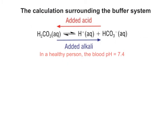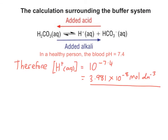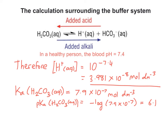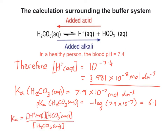Let's look at the calculations surrounding this buffer system. You start with the desired pH, which is 7.4. If you insert 7.4 into the pH equation — 10 to the minus pH — it tells you that the ideal concentration of hydrogen ions in healthy blood should be 3.981 × 10⁻⁸ mol dm⁻³. If we know the Ka value for carbonic acid, which is 7.9 × 10⁻⁷ mol dm⁻³, we can work out the pKa for carbonic acid, which is 6.1. We can also write out the Ka expression for this buffer — for the weak acid — by putting in H+, HCO3-, and H2CO3, as shown in the bottom left-hand corner of the screen.